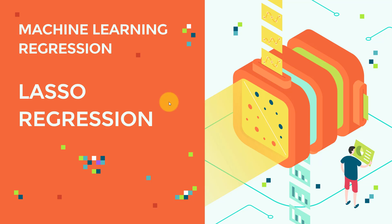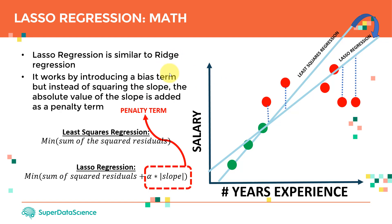Hello everyone and welcome to this lecture. We're going to cover the intuition behind lasso regression. If you recall from the previous lecture, we covered the theory behind ridge regression, and you will find that lasso is actually very close to ridge. The idea of regularization is to change the slope of the line and make it a little bit more flat — more horizontal — so the model will generalize better and avoid overfitting.